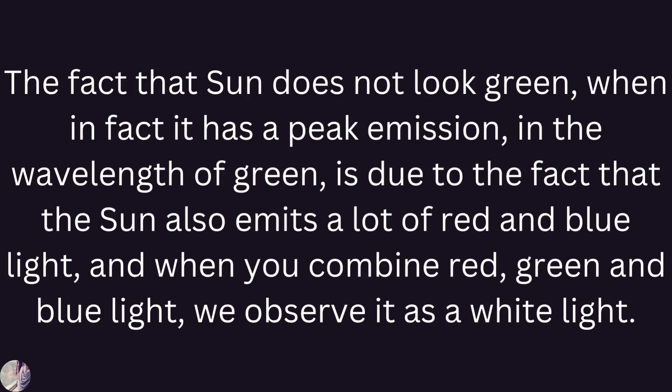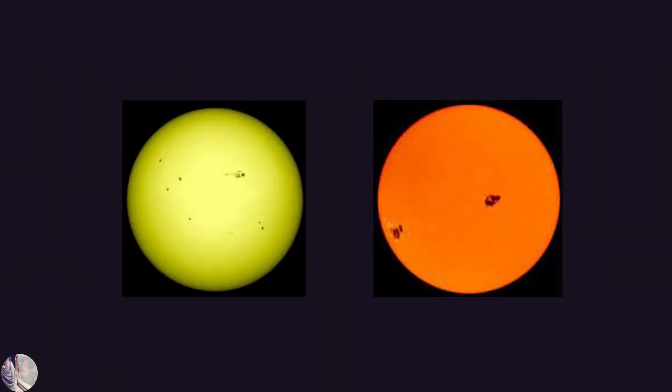Students, the fact that the sun doesn't look green — when in fact it has a peak emission in the wavelength of green — is due to the fact that the sun also emits a lot of red and blue light. And when you combine red, green, and blue light, we observe it as white light. Without red and blue light, the sun would appear green, as represented by this figure.